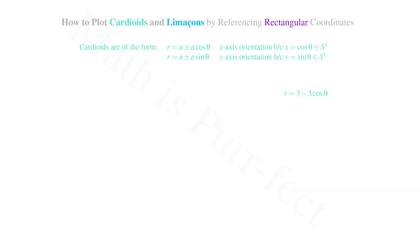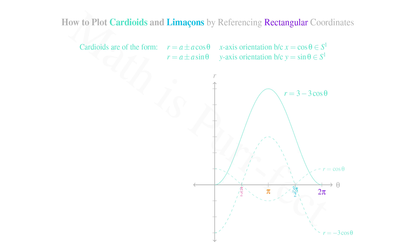Next, let's consider the graph of r = 3 - 3cos(θ). The major difference from the last equation is that the coefficient of cosine is negative, so how will this affect the orientation? As before, we want to first plot the graph in the rectangular coordinate system. We begin with the graph of cos(θ), then multiply by -3, which stretches the graph vertically by a factor of 3 and reflects it about the x-axis. Finally, we add 3, translating the graph vertically 3 units upwards.